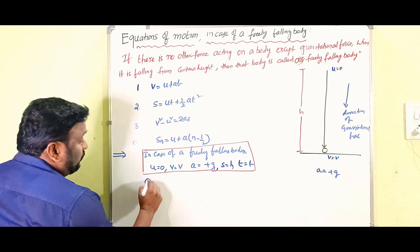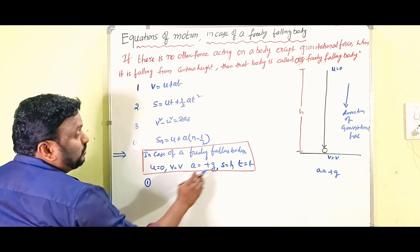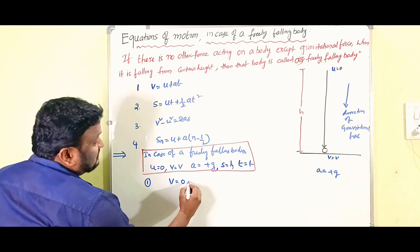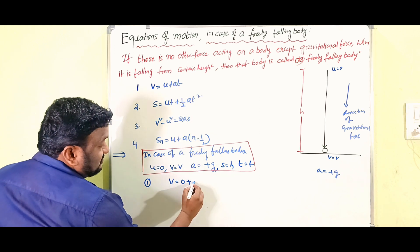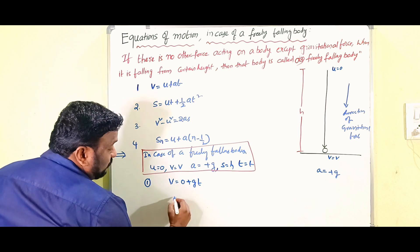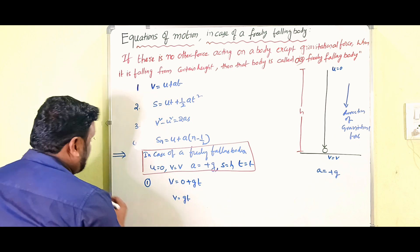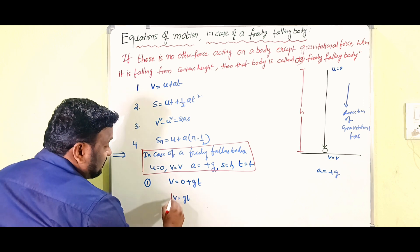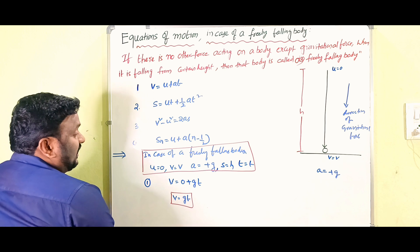First equation: v equals u plus at. Since u is 0, we get v equals 0 plus g times t. Therefore, v equals gt. That is the first equation of motion in case of a freely falling body.